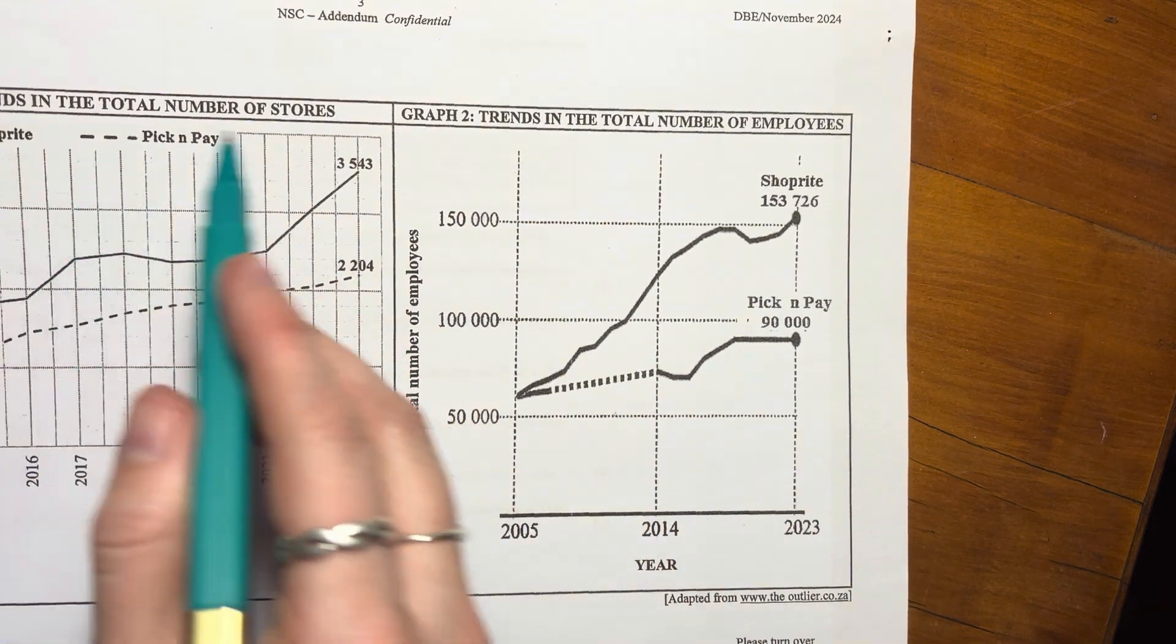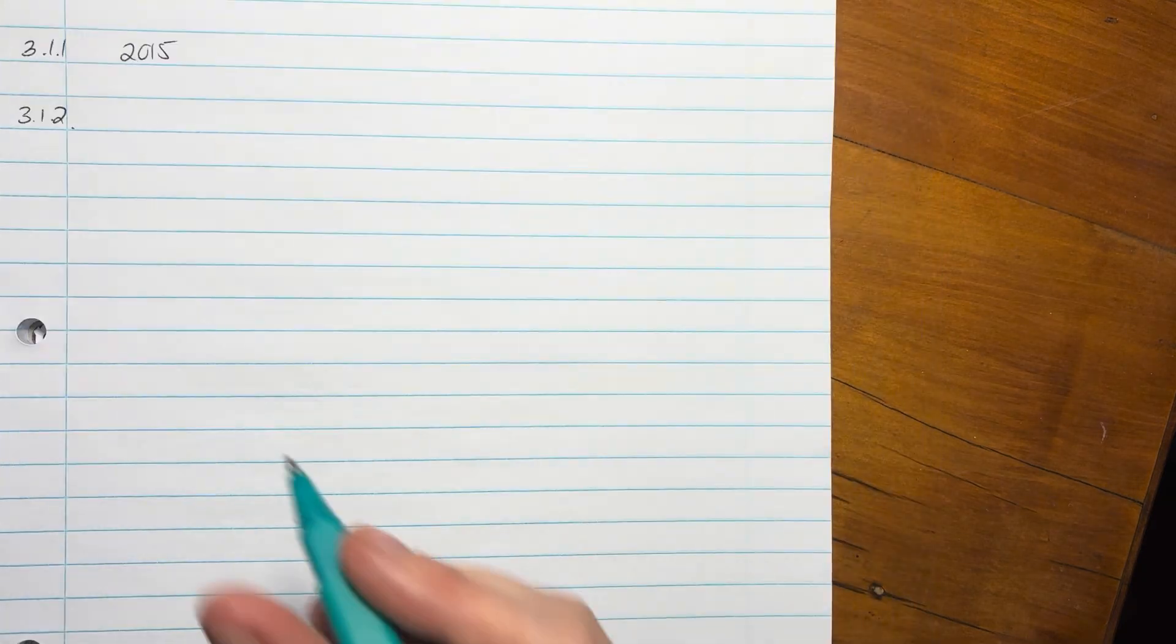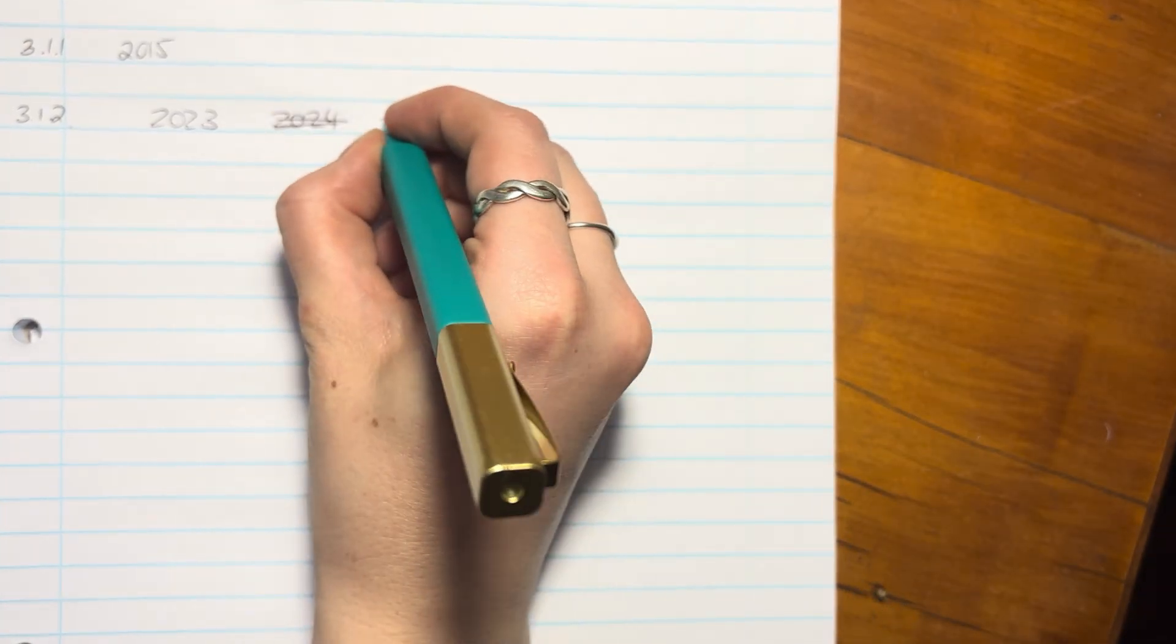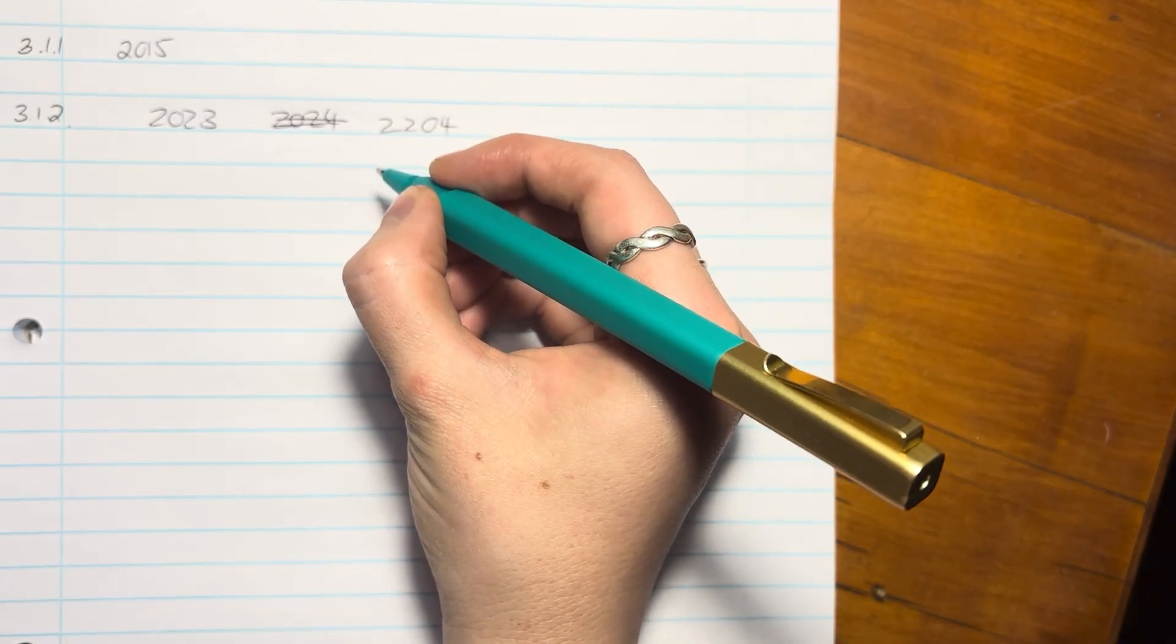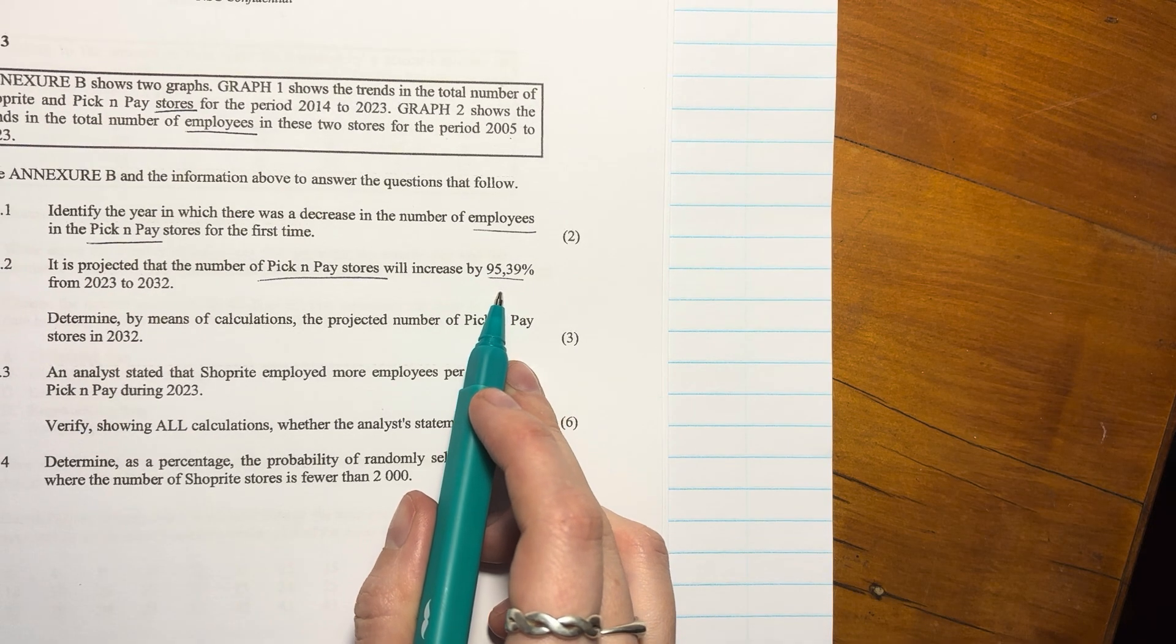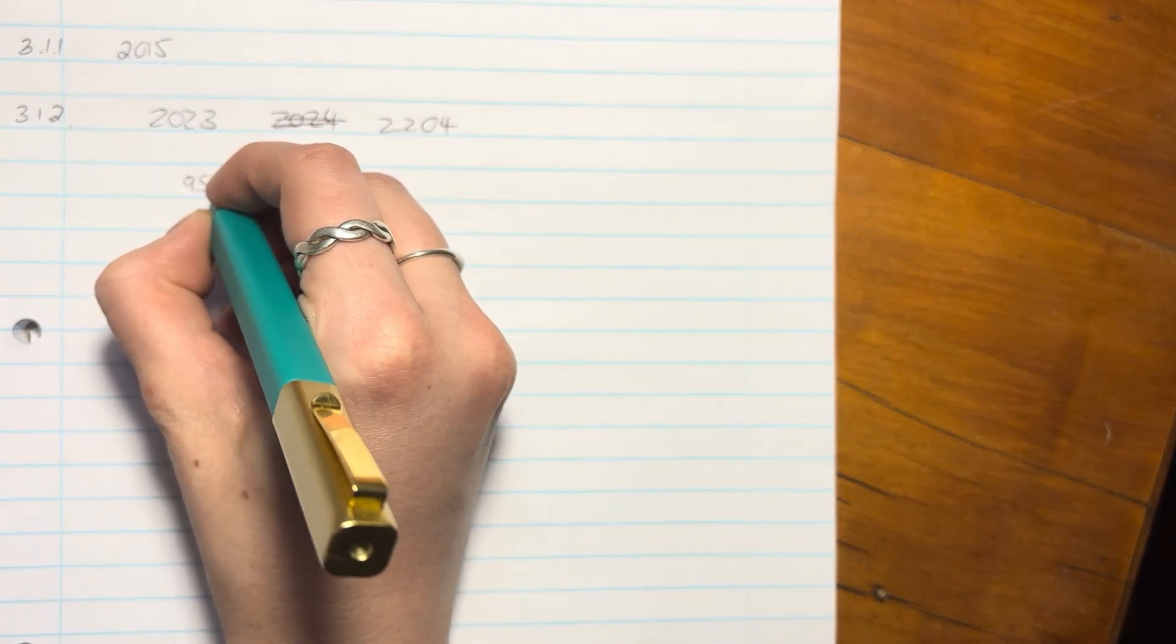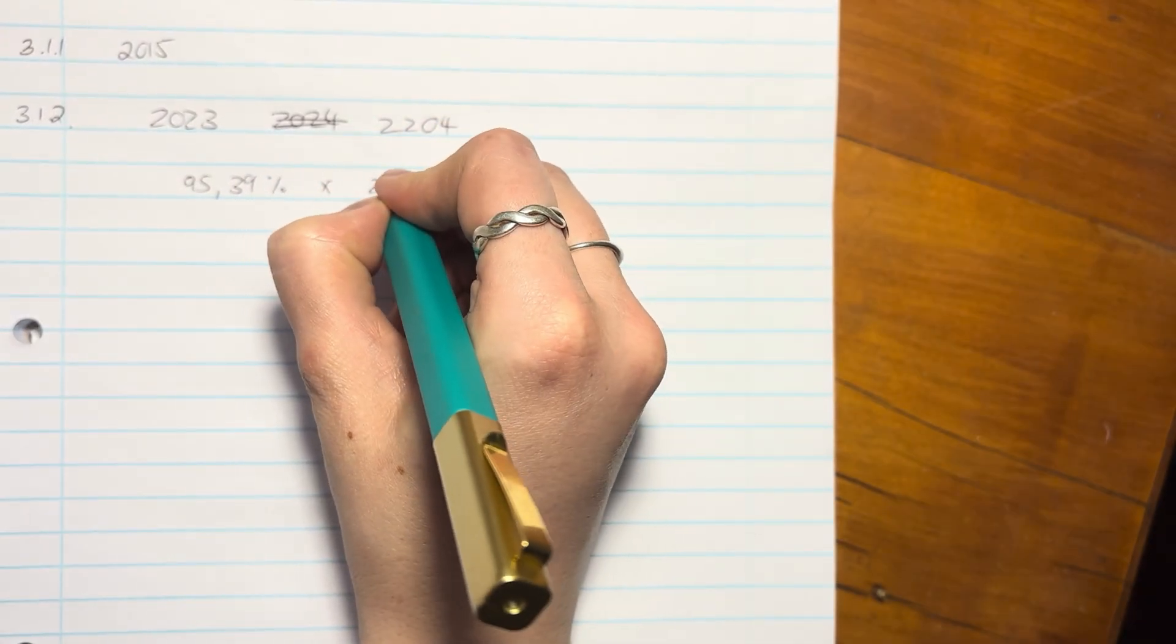The number of stores for Pick n Pay, which is this dotted line, is 2204. So the 2023 number is 2224, sorry, I said that wrong, 2204, right? And that has to increase by, it said, 95.39%. So what we're going to do is we're going to say, well, what is 95.39% times 2204, right? What is that answer?